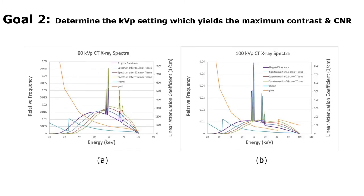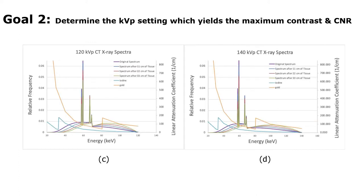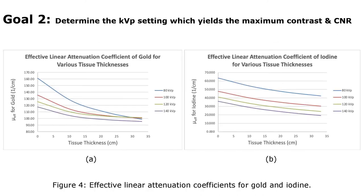Typical contrast agents usually require lower kVp settings for optimal image contrast. Iodine's effective linear attenuation coefficient, for example, is always higher at lower kVps. Because of iodine's 33 keV K-edge, this relationship holds whether imaging in air or in tissue. Gold's 80.7 keV K-edge, on the other hand, causes the relationship between the effective linear attenuation coefficient and kVp to switch at a given depth in tissue — a very interesting phenomenon.